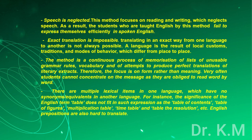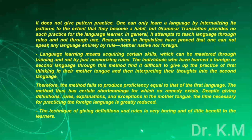Exact translation is impossible. Translating exactly from one language to another is not always possible, as a language is the result of local customs, traditions, and modes of behavior which differ from place to place. The method is a continuous process of memorizing lists of unusable grammar rules and vocabulary, and attempting to produce perfect translations of literary extracts — focusing on form rather than meaning. Students cannot concentrate on the message as they are obliged to read word by word. There are multiple lexical items in one language with no equivalents in another; for instance, the English term 'table' covers expressions such as table of contents, table of figures, multiplication table, and timetable. English prepositions are also hard to translate. The method does not give pattern practice: one can only learn a language by internalizing its patterns to the extent that they become a habit, but grammar translation provides no such practice.